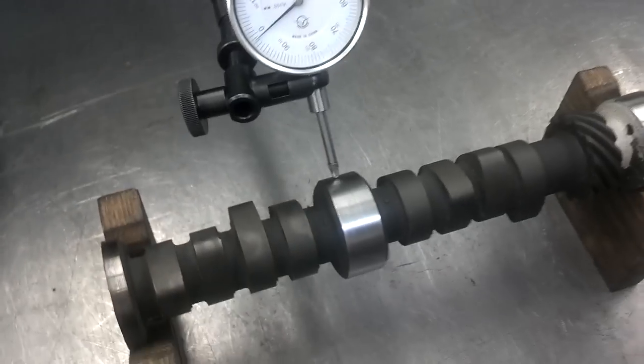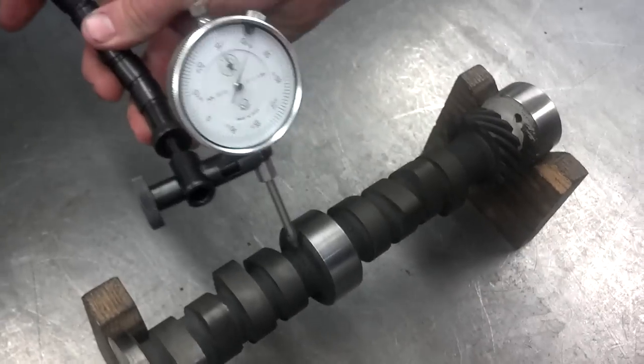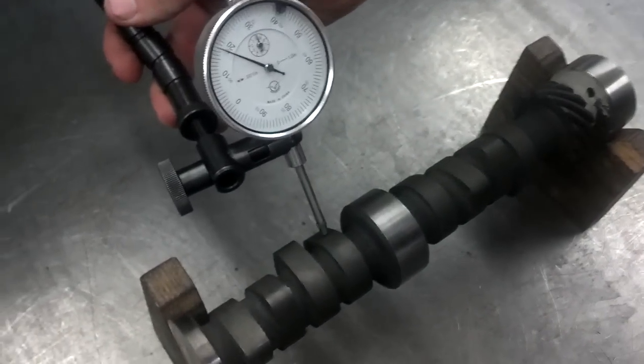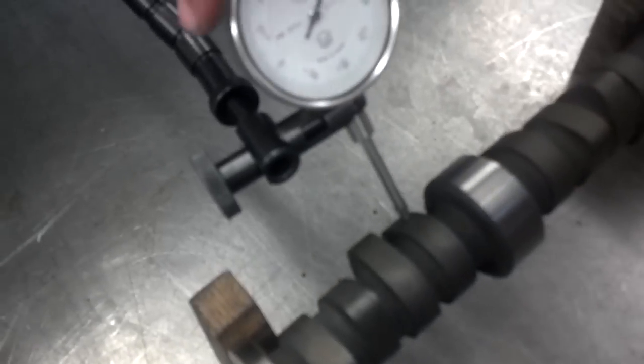Now, the second measurement is going to be lobe lift. And this can be done really easily here at the same time. We just slide the dial indicator down, or slide the camshaft down until we've got the dial indicator on the camshaft lobe.